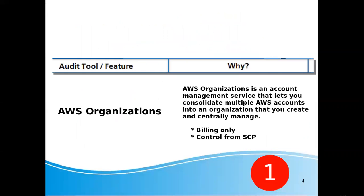The first service is AWS Organizations. This qualifies what we need regarding multiple accounts. We can segregate them — we can use dev, test, and all resources separately. We can manage them all in different accounts and isolate them. We can also add billing only.